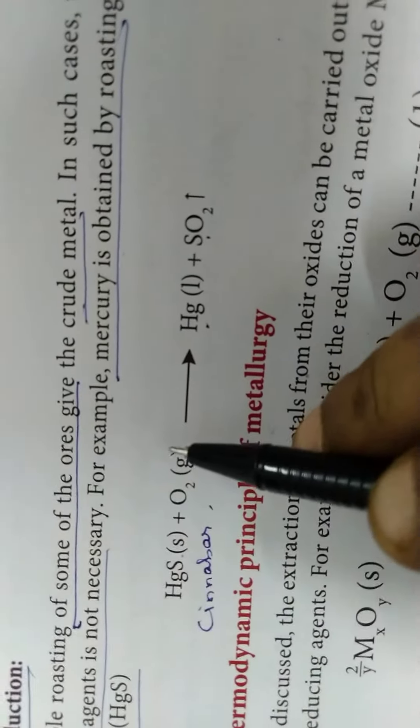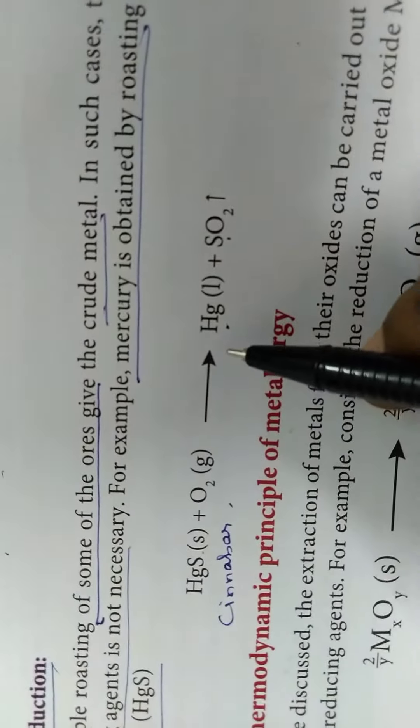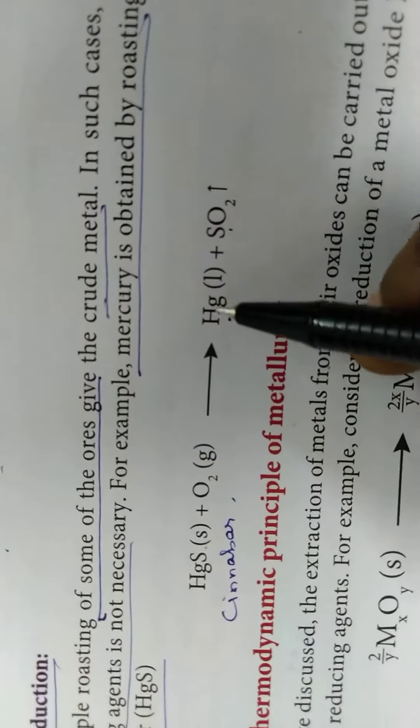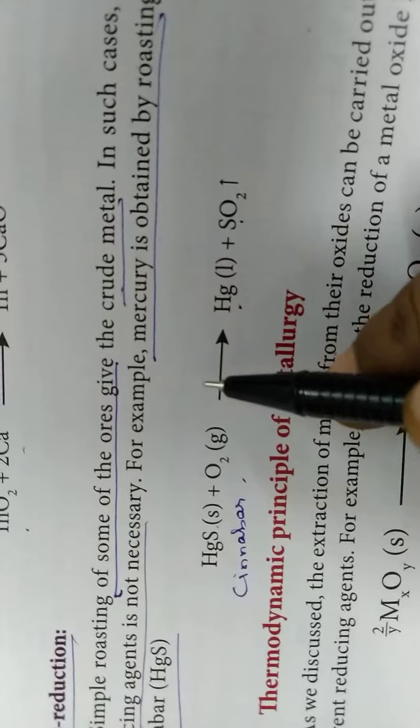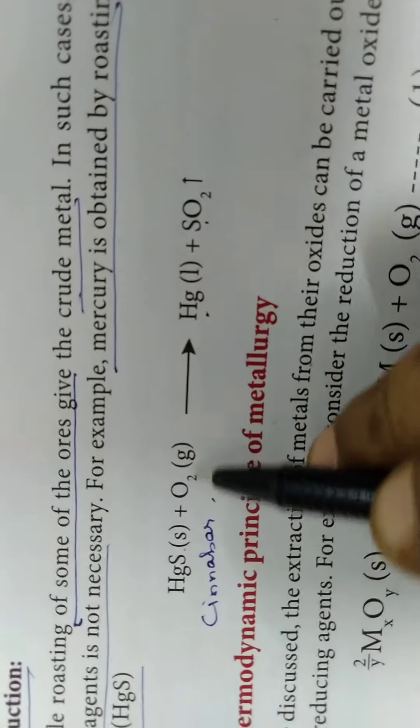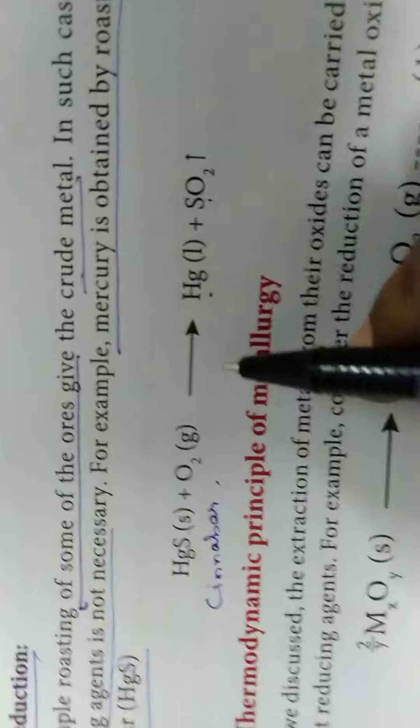So in this case, a reducing agent is not necessary. Mercury is obtained by roasting only. Roasting means the sulphide ore is heated with excess oxygen, that's all.